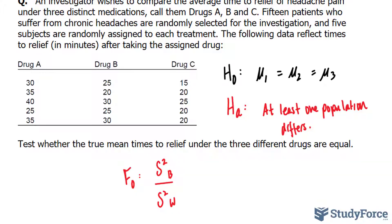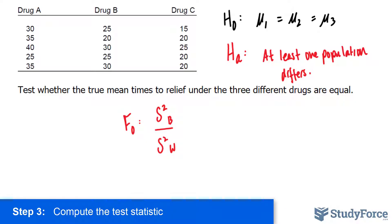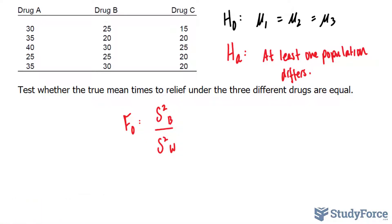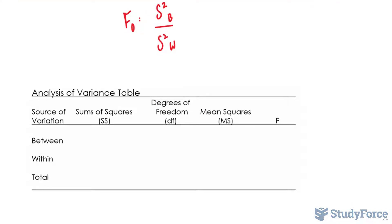The calculations for these will be shown later on in this video. Once F observed is found, we'll use it to compare it to F critical, which we obtain from a table. Step three involves computing the test statistic, and this is where the infamous ANOVA table comes into play. The ANOVA table looks like this, and in order for us to fill this in,